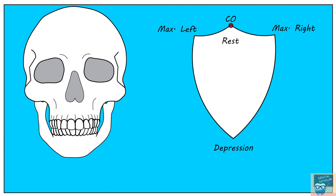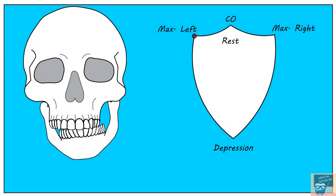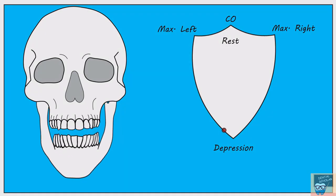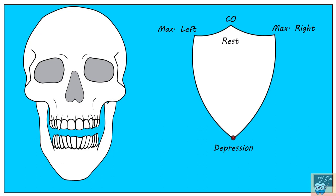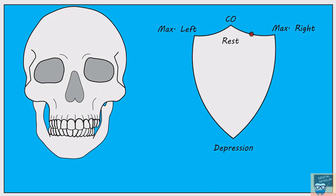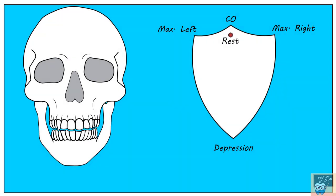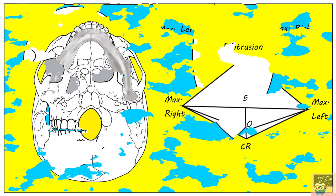Let's now see the mandibular movement in the frontal plane. The envelope of motion in the frontal plane resembles a shield, and the highest point is centric occlusion or maximum intercuspation. While maintaining occlusal contact, slide the mandible towards the left to reach the maximum left lateral position. From here, when you depress the mandible, it comes into the center. Then elevate the mandible to the maximum right lateral position and slide back into maximum intercuspation. Upon relaxation, the mandible depresses slightly into the rest position.